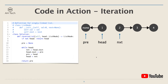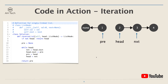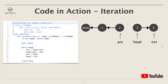Then we move pre to head and head to next, advancing all three pointers. In the next while loop iteration, we repeat the same process — let head point to the pre node, then move pre, head, and next. Following the same process, when the while loop finishes, all the links will be reversed and pre will point to the last node. The pre pointer is now the new head of the reverse list, so we return pre at the end.